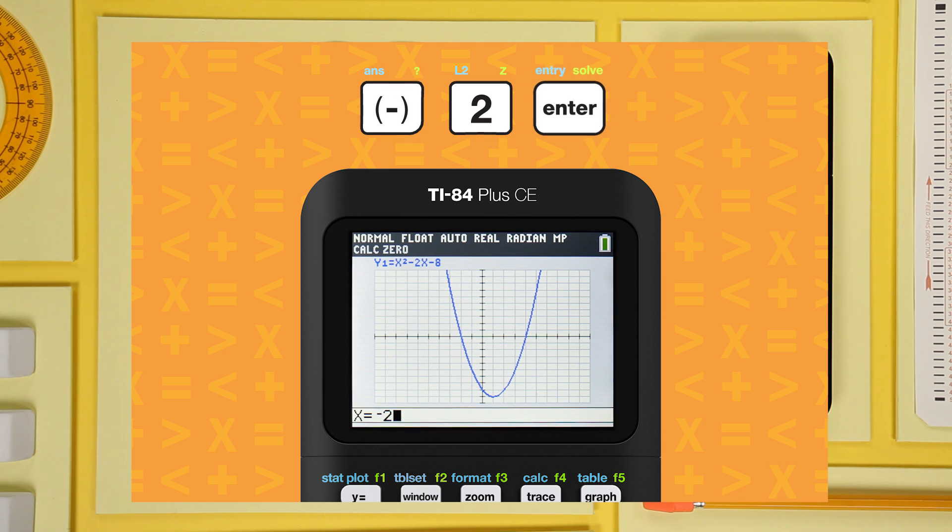Press enter, and there it is. The left x-intercept is negative 2.